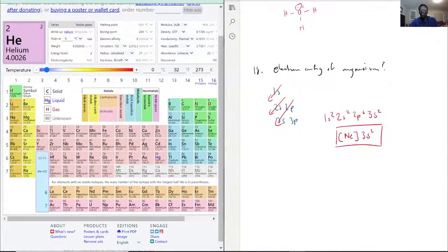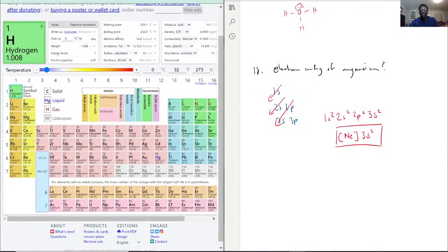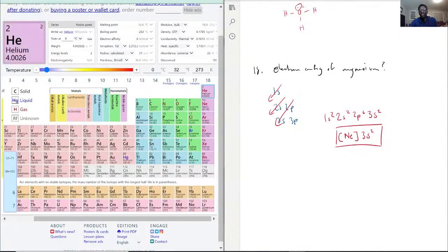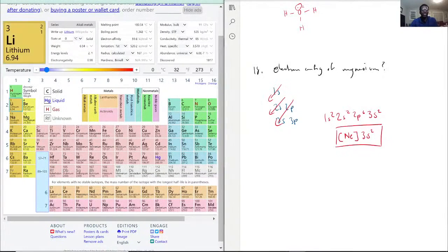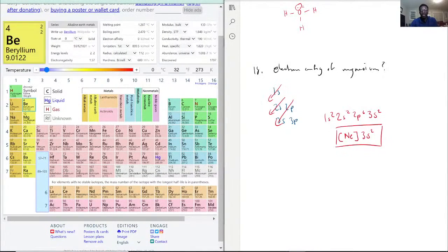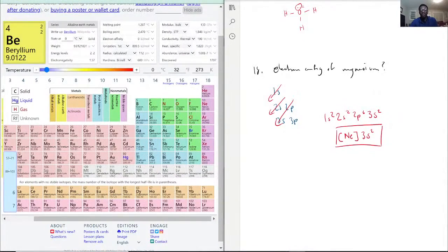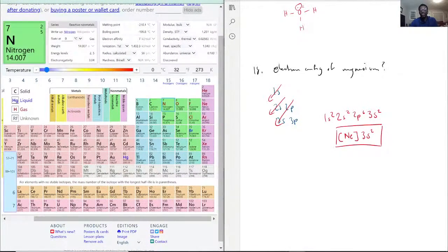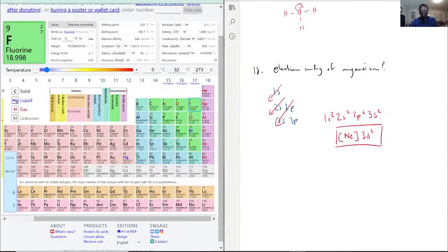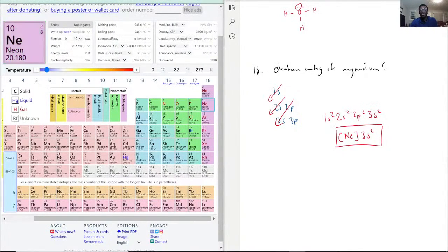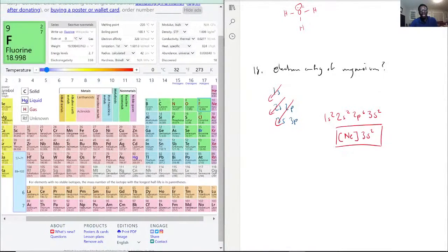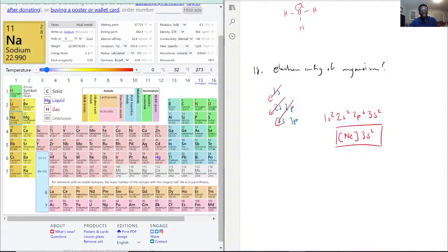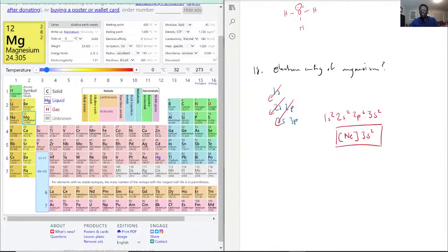So if we count it through, we have 1s¹, 1s², then we go down to lithium, 2s¹, 2s², then we skip over to boron, which would be 2p¹, 2p², 2p³, 2p⁴, 2p⁵, 2p⁶ at neon, and then we have 3s¹, 3s² for magnesium.